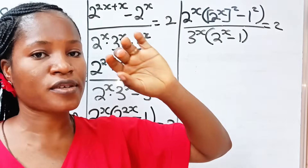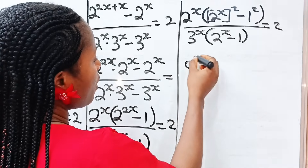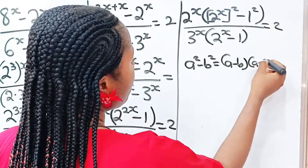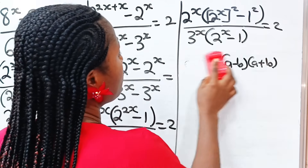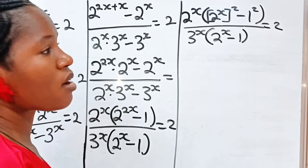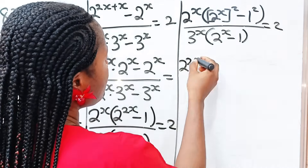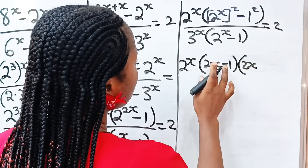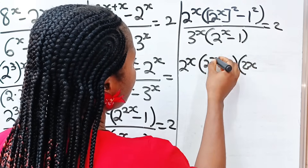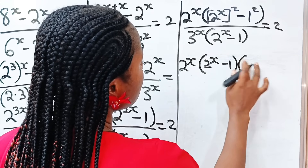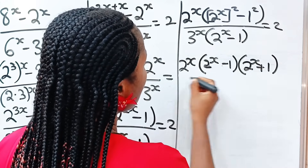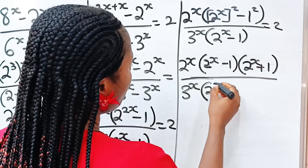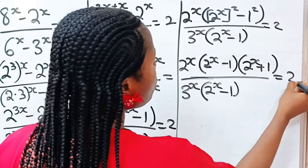Notice that we have a difference of two squares. a squared minus b squared is equal to a minus b multiplied by a plus b. So we can write this as 2 to the power of x multiplied by 2 to the power of x minus 1, and 2 to the power of x plus 1, everything divided by 3 to the power of x multiplied by 2 to the power of x minus 1, is equal to 2.